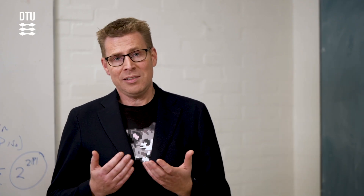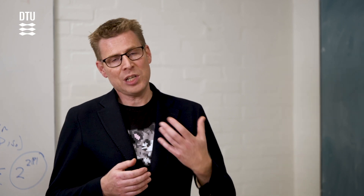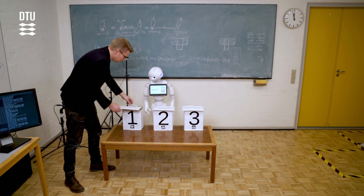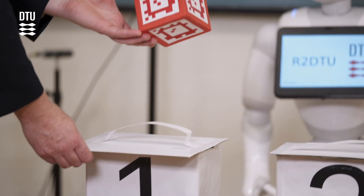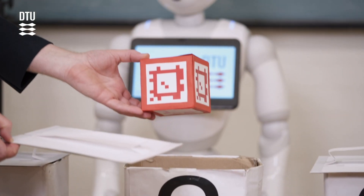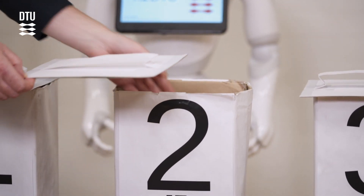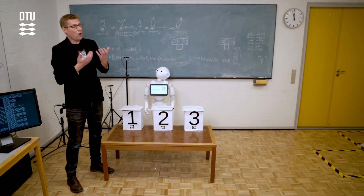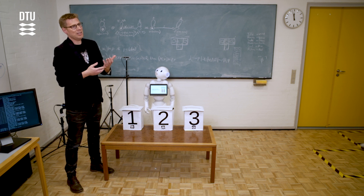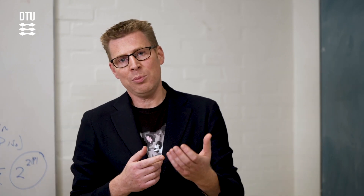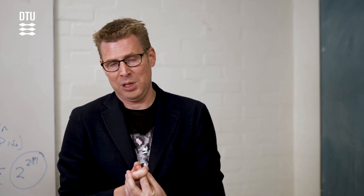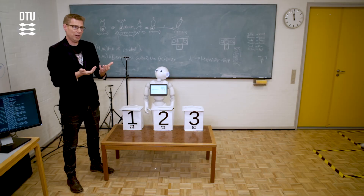So now that Lasse is away, I can try to make changes to the state of the scenario. For instance, I can take the red cube from box one and put it into box two. Now, in order to pass a Sally-Anne test, the robot has to be able to both know where the red cube is, but also know where Lasse believes the red cube to be. So I can try to ask the robot.